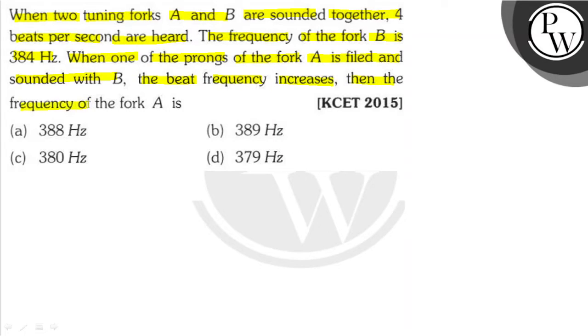Then the frequency of tuning fork A is? In the question, we have two tuning forks A and B. When sounded together, 4 beats per second are heard. The frequency of tuning fork B is given to us, 384 Hz.